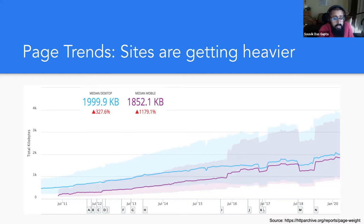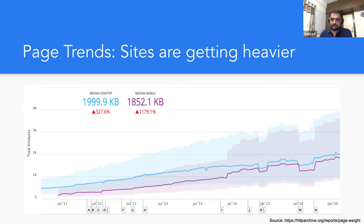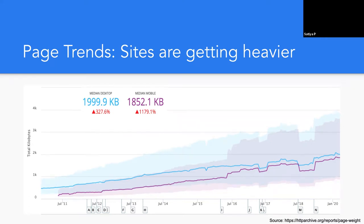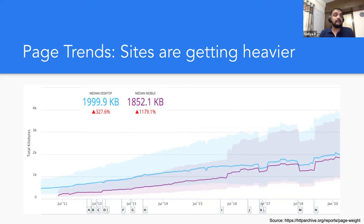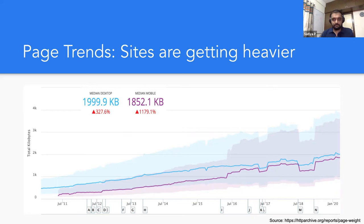Question: Does this number include all media or does it exclude anything? It actually includes the pages — that's your HTML, CSS, JavaScript, images, fonts, and in some cases audio and video as well. This data set is from Web Archive, which samples about 5 million websites across the internet. It's a constantly growing database. They also use the Chrome User Experience Report to put out some of these trends.